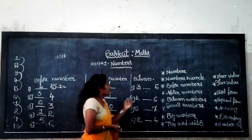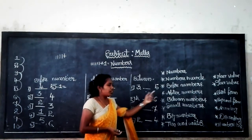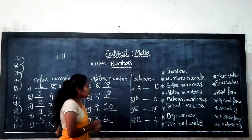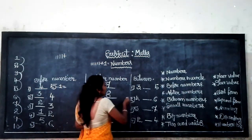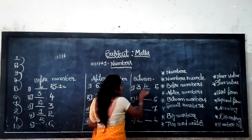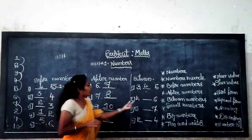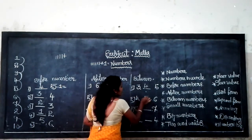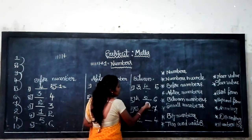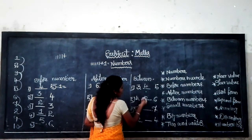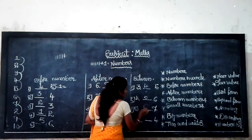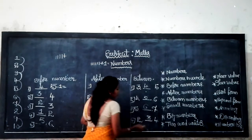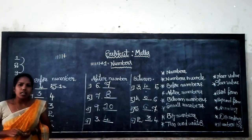Let's look at more between numbers: 3 and 5, 4 and 6, 5 and 7. Dear students, the after number of 3 is 4. The after number of 4 is 5. The after number of 5 is 6. The after number of 2 is 3.